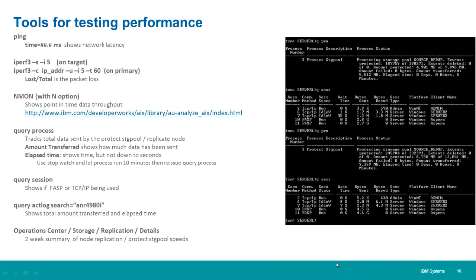In summary, the tools used for testing performance include: ping, iperf, nmon, query process, query session, and query actlog. Additionally, if you have Operations Center running and have been running Protect Storage Pools for a while, you can get a two-week summary under Operations Center Storage Replication Details and see the speeds for that period.